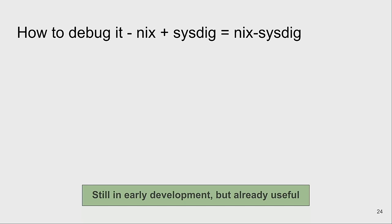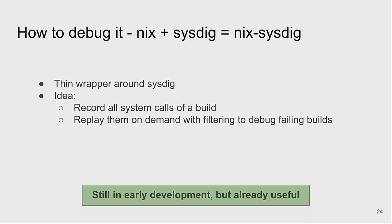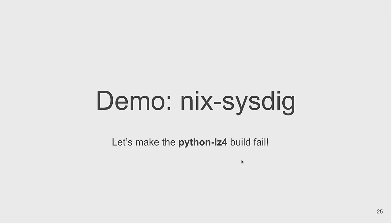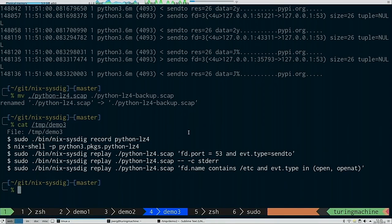What I'm building is a little wrapper around sysdig called 'nix-sysdig' that filters properly what happens inside the build sandbox. At the moment it just records builds and you can use sysdig infrastructure to filter what happened, but on the roadmap I have ideas like: if a package tries to reach the network, you'll see network-related system calls — usually starting with some DNS resolution — and you can write small programs to detect that automatically.